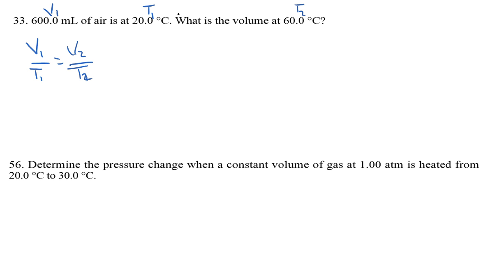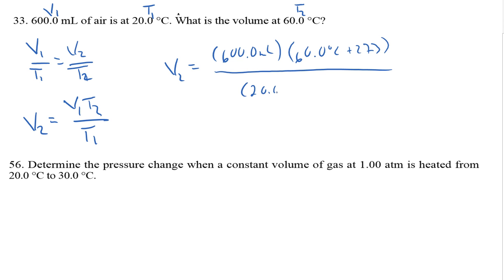Remember, temperatures need to be converted to Kelvin in order to use Charles' Law. Just as before, I'd like to isolate my variable, trying to solve for V2. And then plug in some numbers. V2 is equal to 600 milliliters times 60 degrees Celsius plus 273 divided by 20 degrees Celsius plus 273. My temperatures cancel, leaving with just a unit of volume, and that comes out to 682 milliliters.